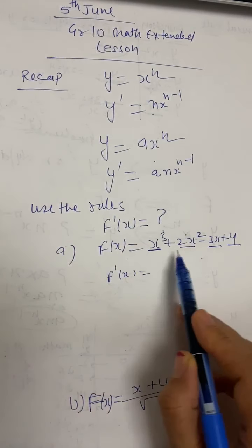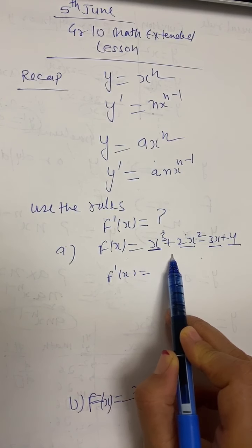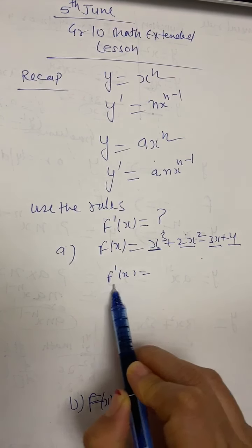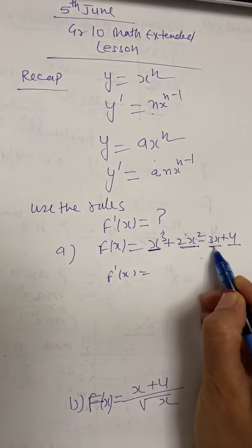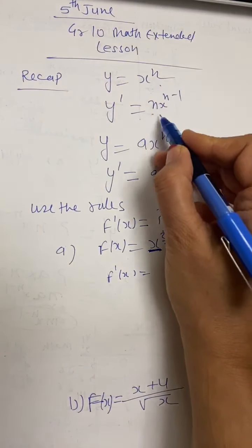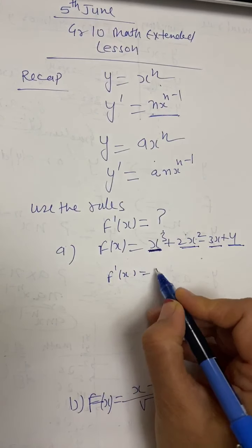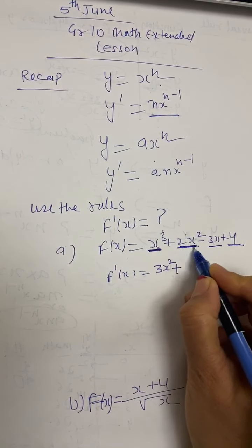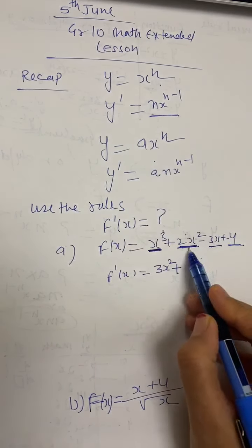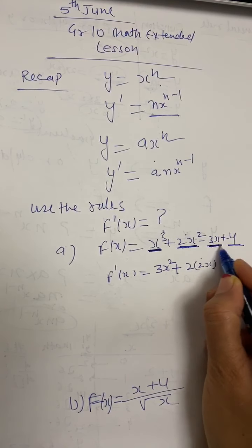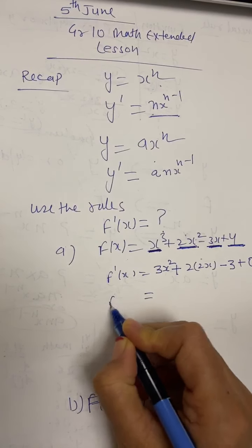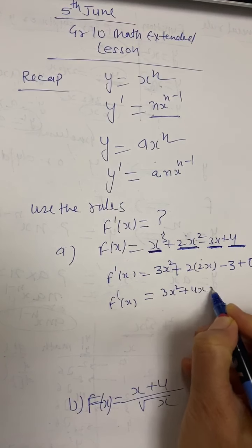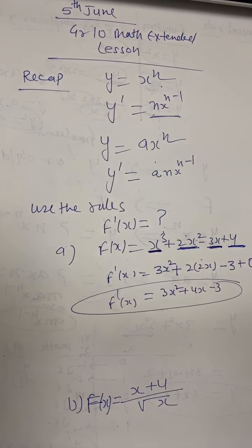Let's use those rules to find the derivative of the first function: f(x) equals x cubed plus 2x squared minus 3x plus 4. To find f'(x), we treat this as an addition of four functions. The derivative of x cubed is 3x squared; for 2x squared using the formula ax^n, that gives 2 times 2x equals 4x; the derivative of the linear term negative 3x is negative 3; and the derivative of constant 4 is 0. So f'(x) equals 3x squared plus 4x minus 3.